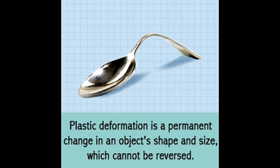Plastic deformation — definition: In material science and engineering, plastic deformation is a process which causes a permanent change in the shape and size of a solid object. This is the opposite of elastic deformation, where an object returns to its original shape and size after the force is removed. When a force is applied on an object, if the force is below a certain limit called the elastic point, the object will regain its original dimensions after the force is removed. Such a temporary change is called elastic deformation.